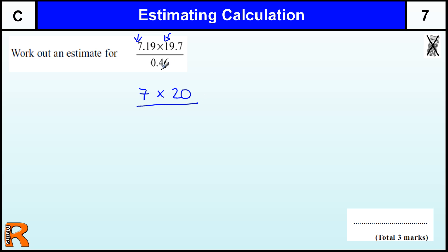We're going to divide that by 0.46, but this is our first digit that's important. So is it going to be 0.4 or 0.5? So we need to round that to 0.5 because this 6 rounds it up.